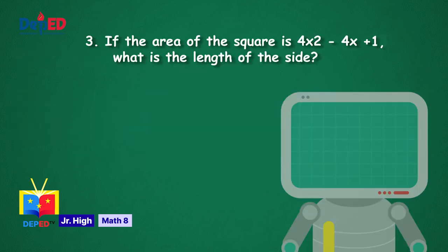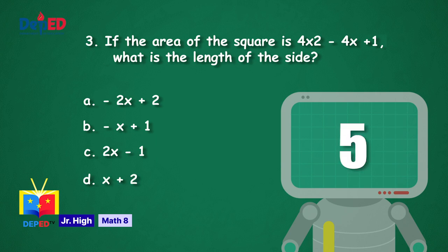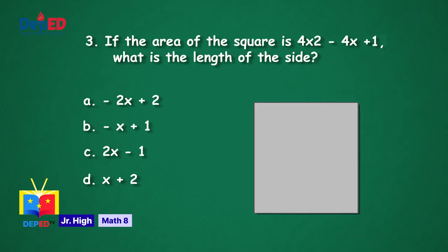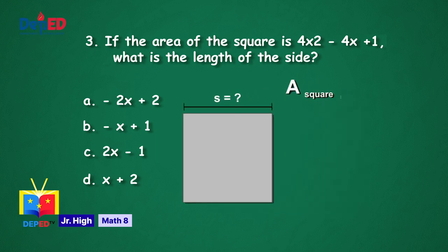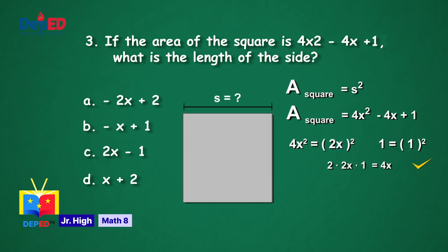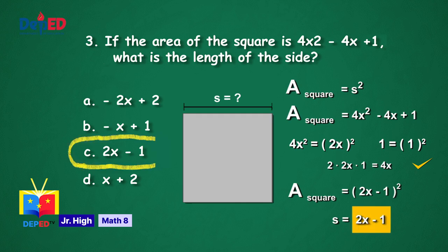Number 3. If the area of the square is 4x squared minus 4x plus 1, what is the length of the side? Is it letter A, negative 2x plus 2? Letter B, negative x plus 1? C, 2x minus 1? Or D, x plus 2? The correct answer is letter C, the side measures 2x minus 1.